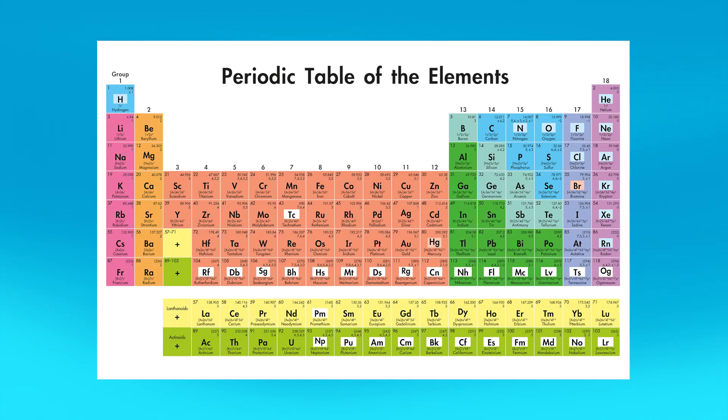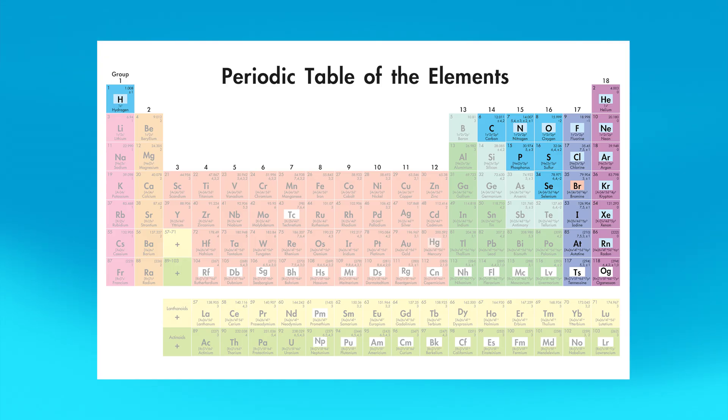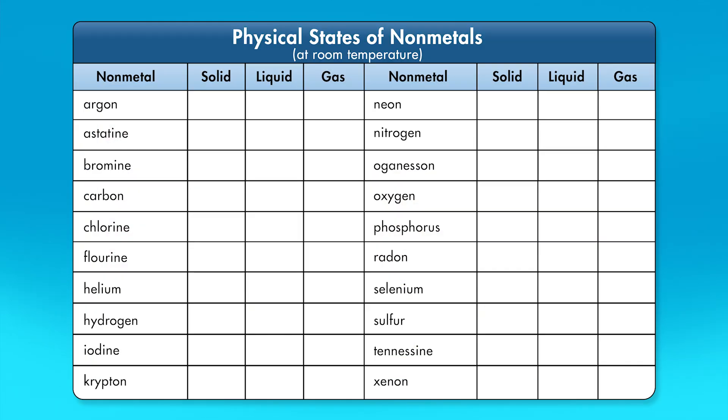On the periodic table, nonmetals are located on the right side, except for hydrogen, which occupies the space at the top of group 1 on the left side of the table. Nonmetals exist in 3 physical states at room temperature. Of the 20 stable nonmetals, 6 are solids, 1 is a liquid, and 11 are gases.